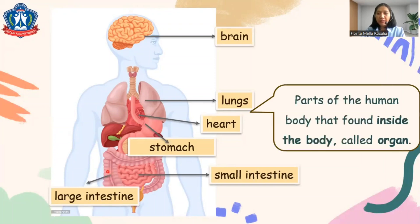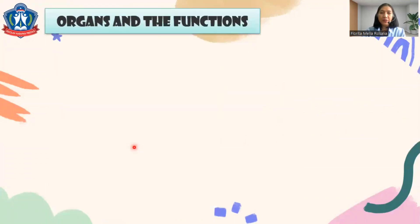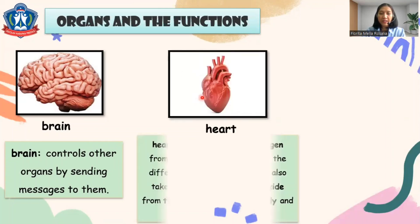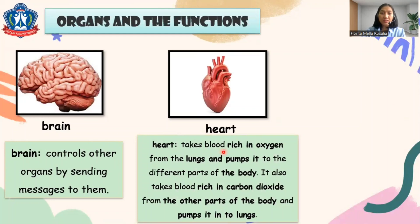The parts of the human body found inside we call organs. Let's see their functions. The brain controls other organs by sending messages to them. The heart takes blood rich in oxygen from the lungs and pumps it to different parts of the body. It also takes blood rich in carbon dioxide from the parts of the body and pumps it into the lungs.